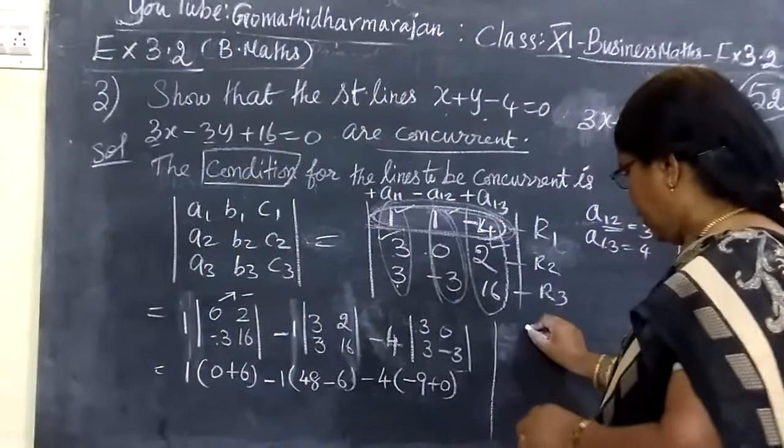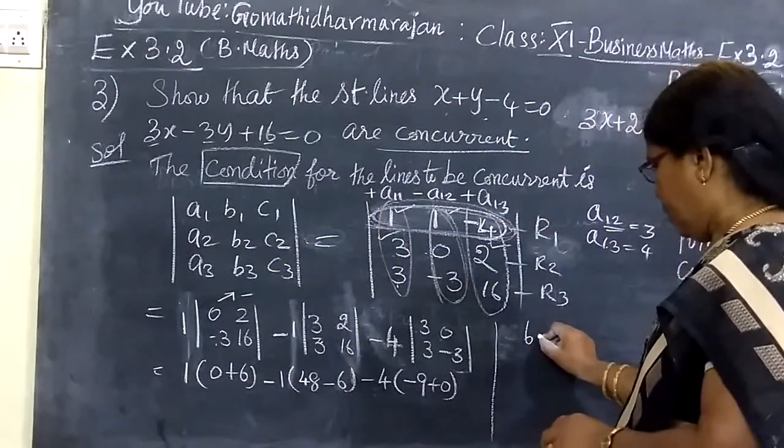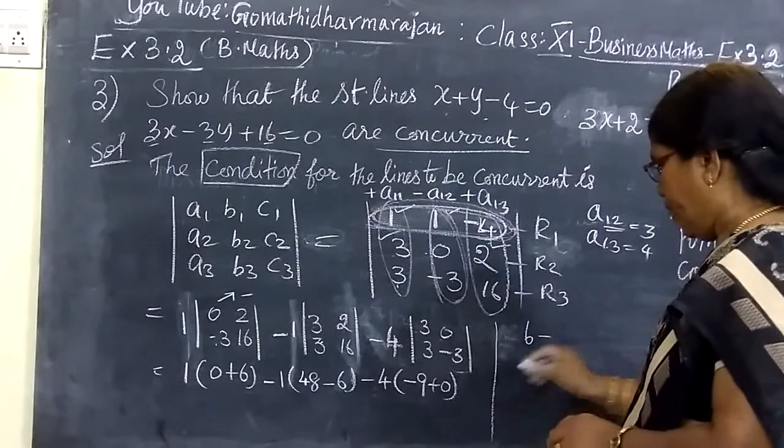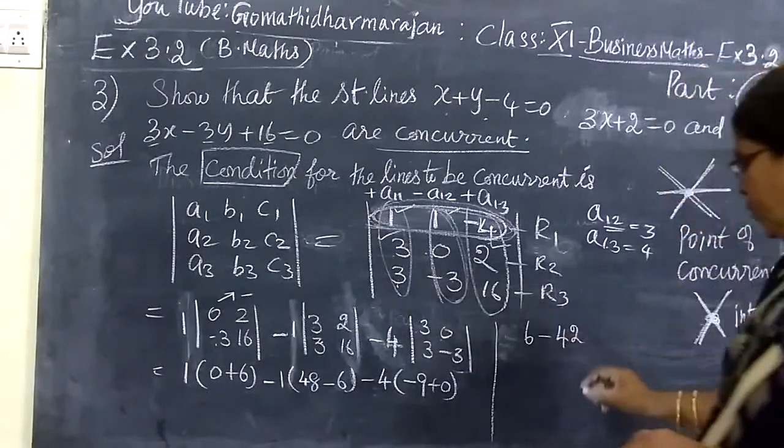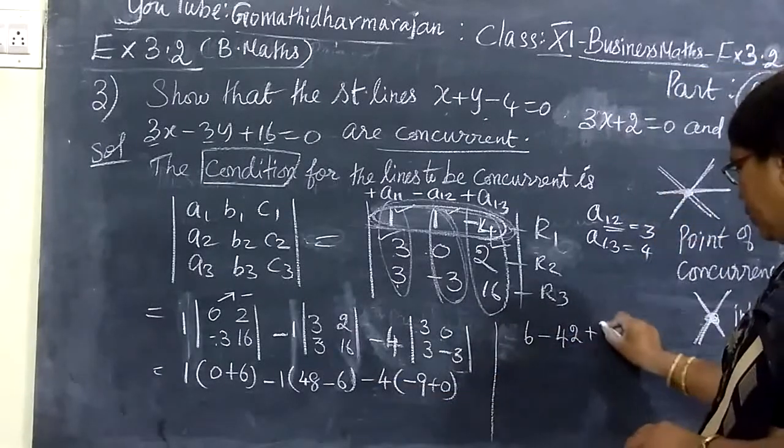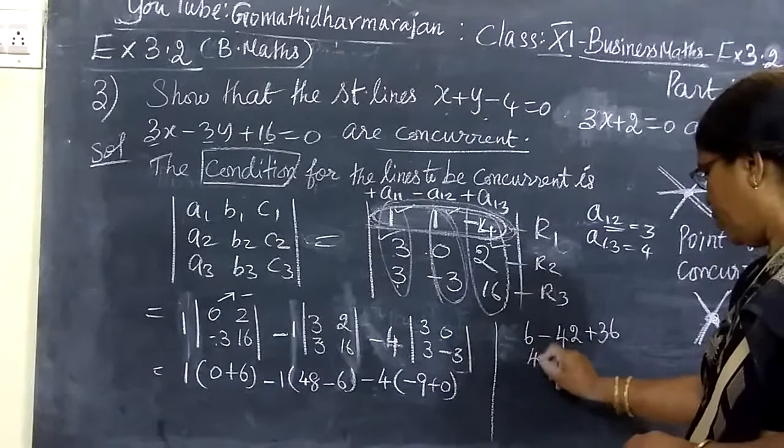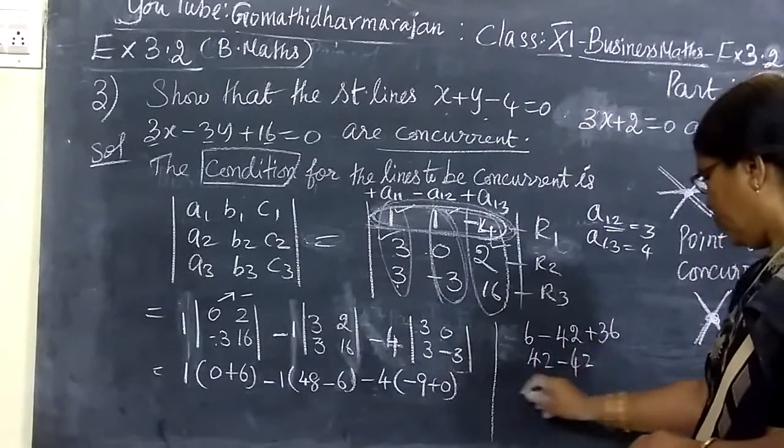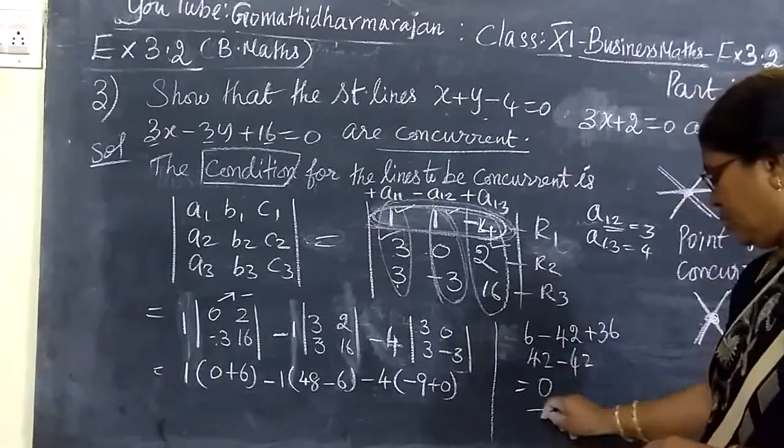So, this here we are writing 6. Then minus 48, minus 42. So minus 42, minus minus is plus. So, you get 36. So, 42 minus 42. So, this is equal to 0.